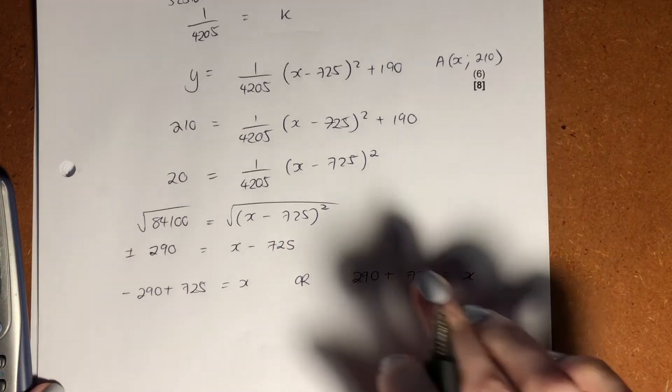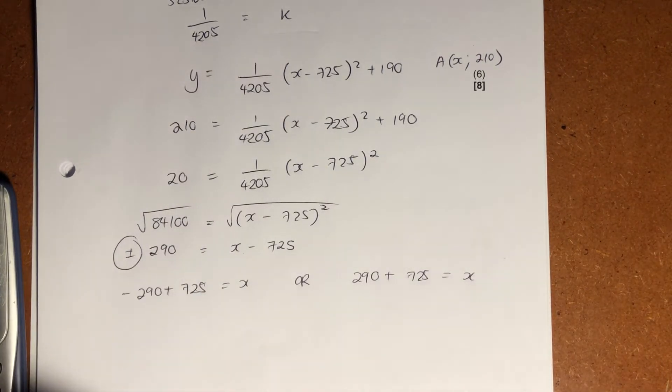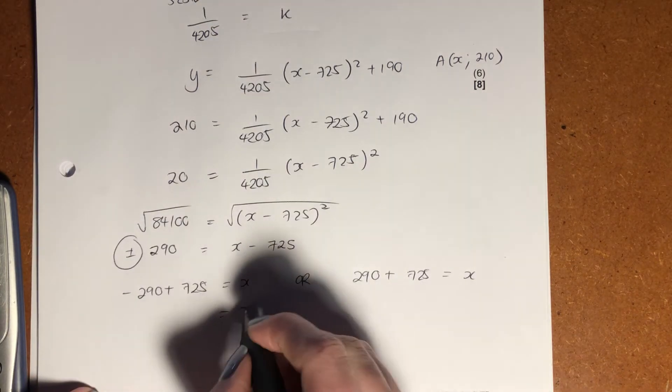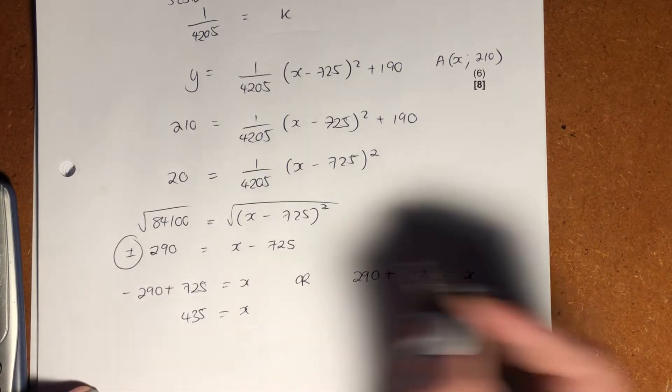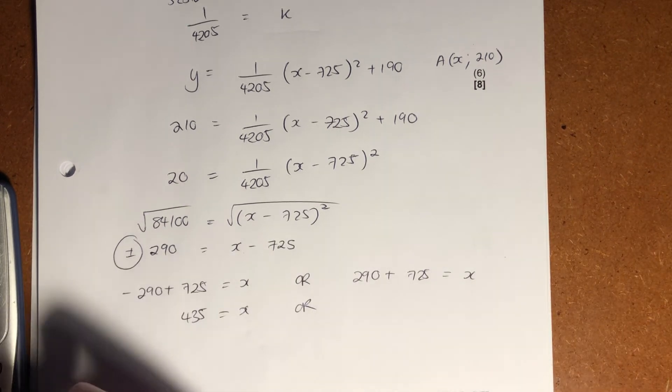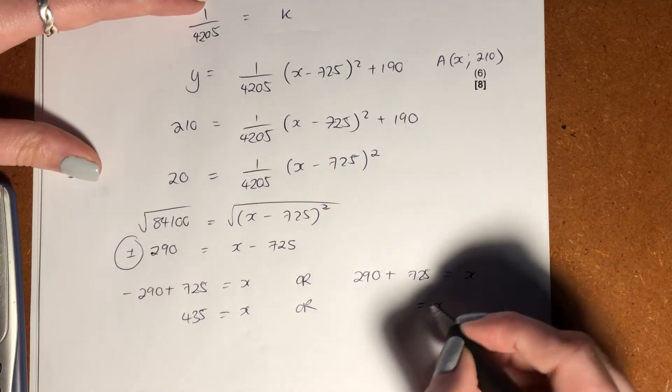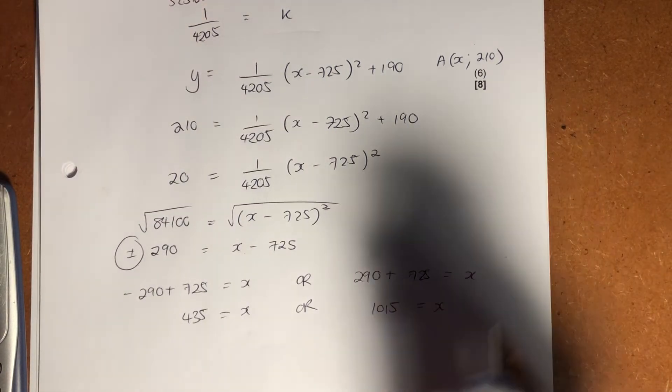Please remember, whenever you have a square, you're always going to have two solutions, so don't forget about this plus minus. So, negative 290 plus 725, we're going to know that x can equal 435, or x is going to be 290 plus 725, and x can equal 1015.